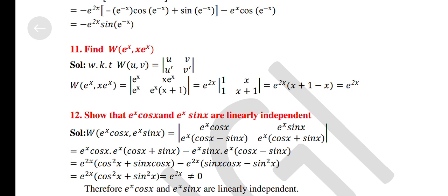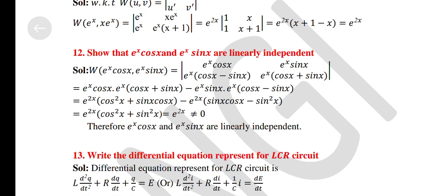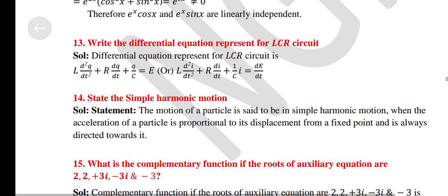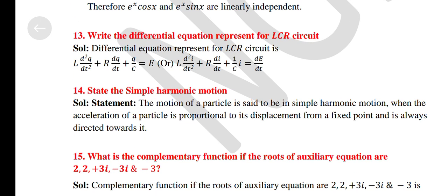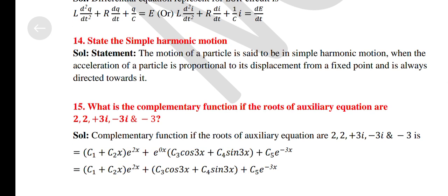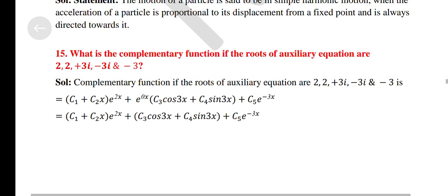Find the Wronskian W(e^x, xe^x). Show that e^x cos x and e^x sin x are linearly independent. Write the differential equation representing the LCR circuit. State the simple harmonic motion. What is the complementary function if roots of the auxiliary equation are 2, 2, ±3i, and 3?